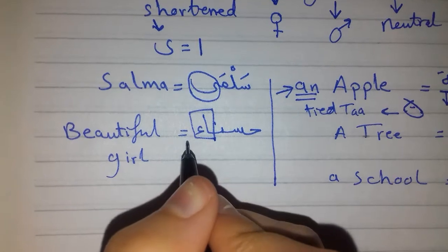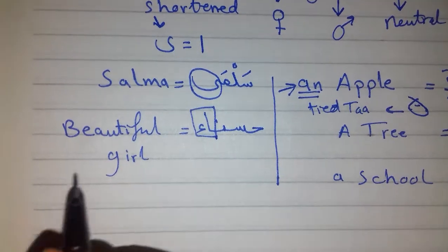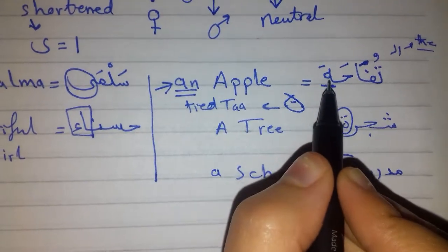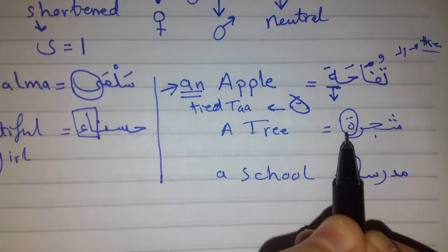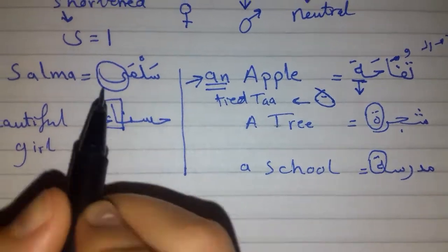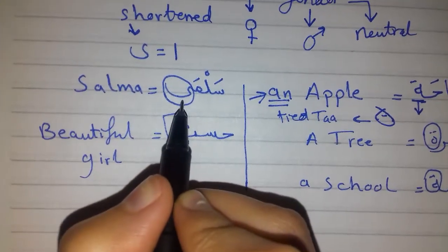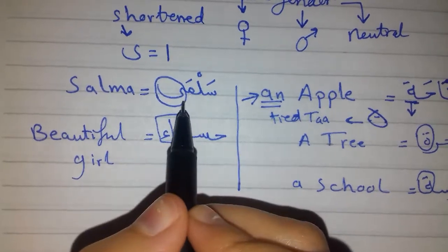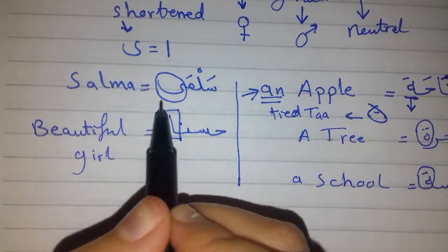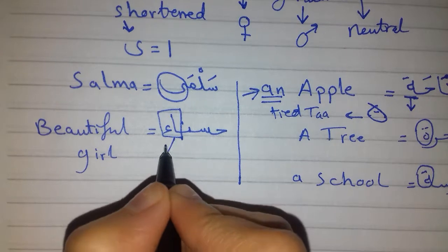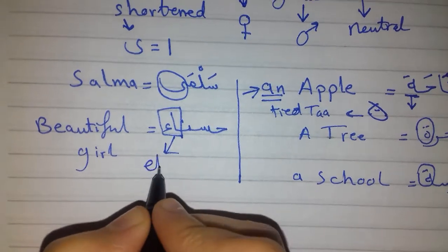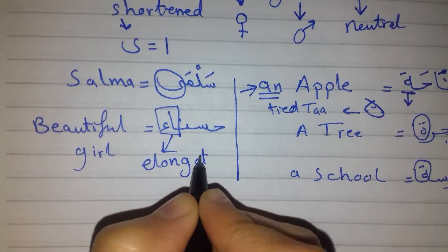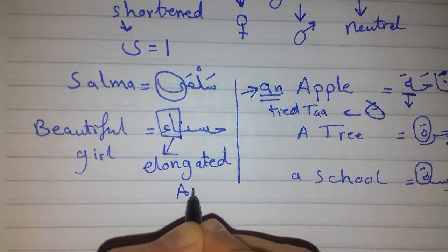We don't say hasna, no. So the first sign is Ta'a al marboota, as in tufaha, shajara, madrasa. Al alif al-maksura, which means the shortened, like Salma. And hasna which is called al alif al-mamdooda, means elongated, elongated alif.